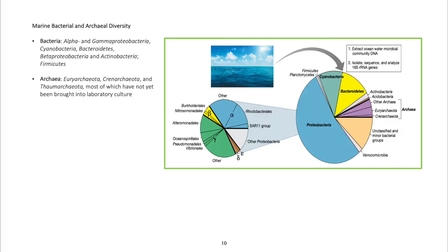Marine bacterial and archaeal diversity: Bacteria include alpha- and gamma-proteobacteria, cyanobacteria, bacteroidetes, beta-proteobacteria, actinobacteria, and firmicutes. Archaea include Euryarchaeota, Crenarchaeota, and Thaumarchaeota, most of which have not yet been brought into laboratory culture.